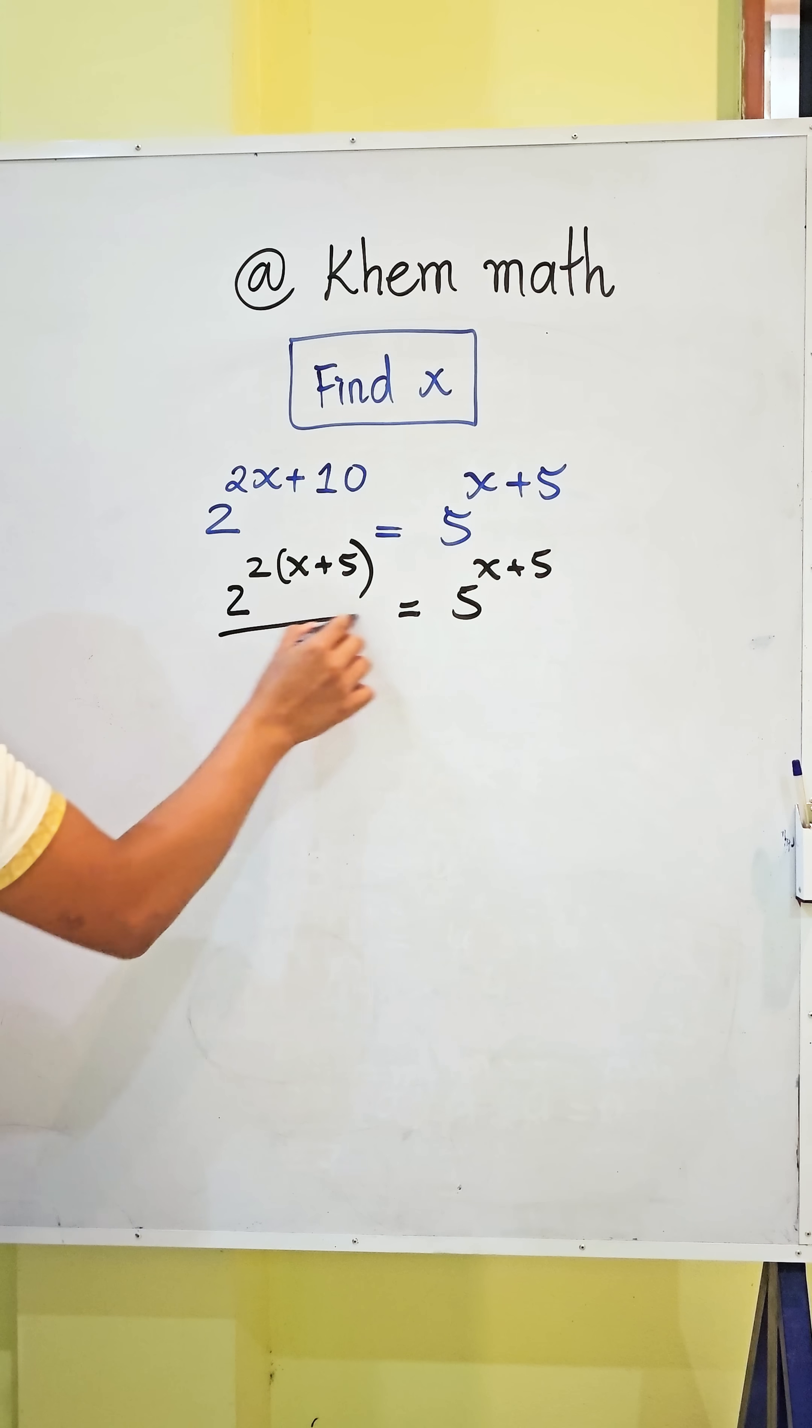So we get divide 5 power x plus 5 on this side, and here also divide 5 to the power x plus 5. They're the same, so we get the exponents. We divide 2 squared by 5 to the power x plus 5.